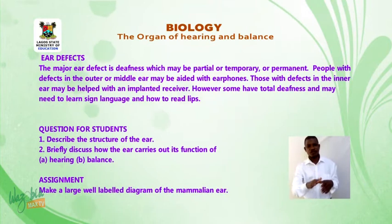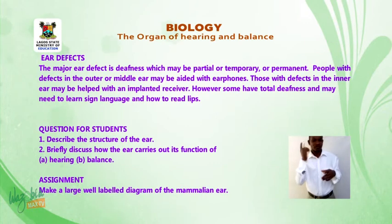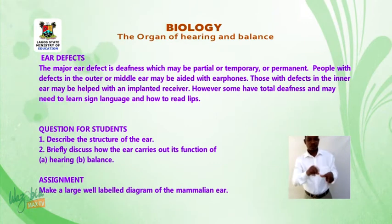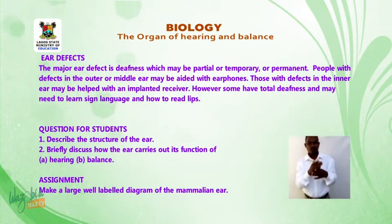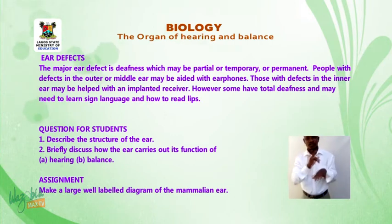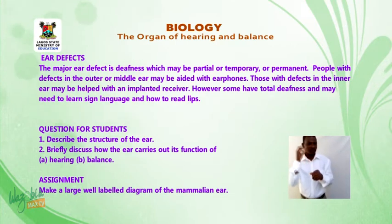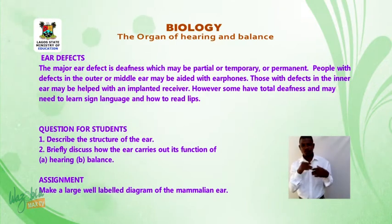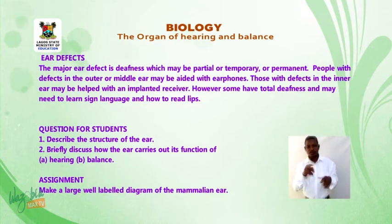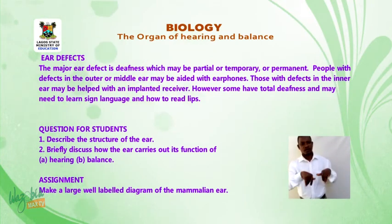Ear defects: The major ear defect is deafness, which may be partial, temporary, or permanent. People with defects in the outer or middle ear may be aided with hearing aids. Those with defects in the inner ear may be helped with an implanted receiver. However, some have total deafness and may need to learn sign language and how to read lips.